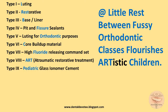"Orthodontic" for Type 5 — luting for orthodontic purposes. "Classes" gives us Type 6 — core build-up material. "Flourishes" for Type 7 — high fluoride releasing GIC. "Artistic" for Type 8 — ART, Atraumatic Restorative Treatment. And "children" for Type 9 — the pediatric glass ionomer cement.